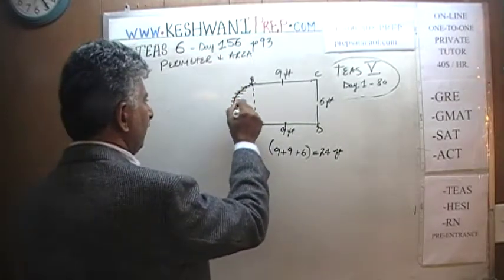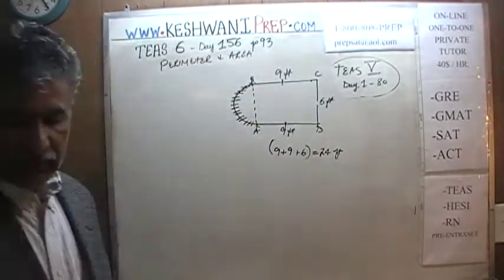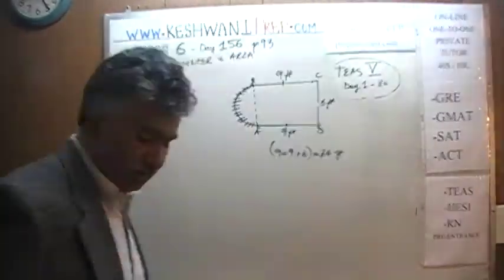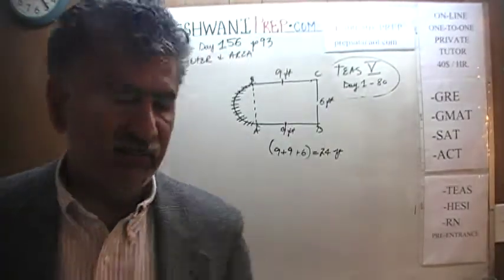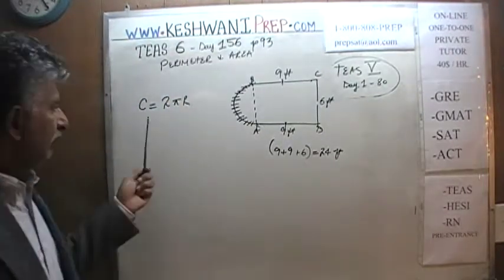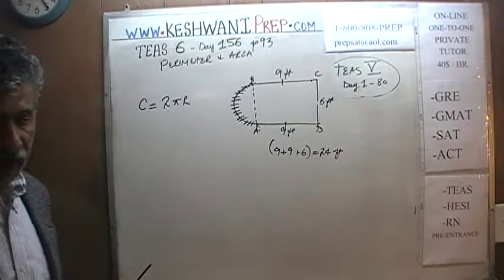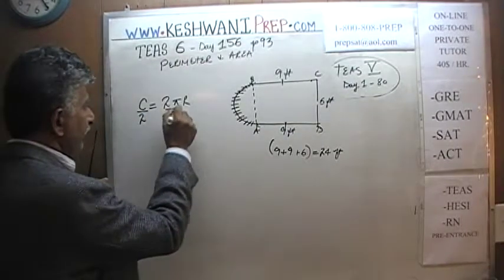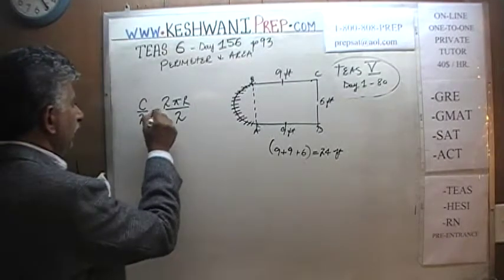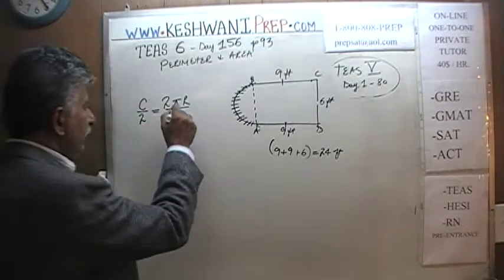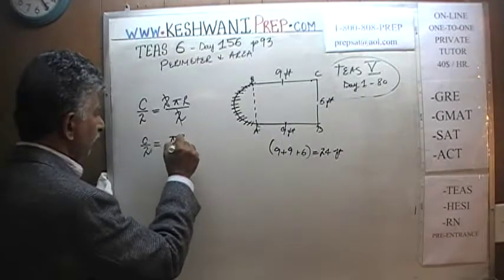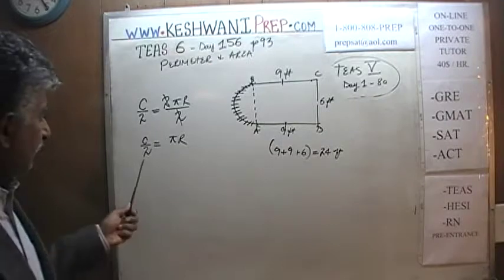Now we have to figure out the length of half the circle. The length of a circle is called the circumference. The circumference of a circle is simply 2πr. But we are not interested in the entire circumference — we only want half of it. So we divide both sides by 2, and it turns out that half the circumference for any circle is simply π times r.